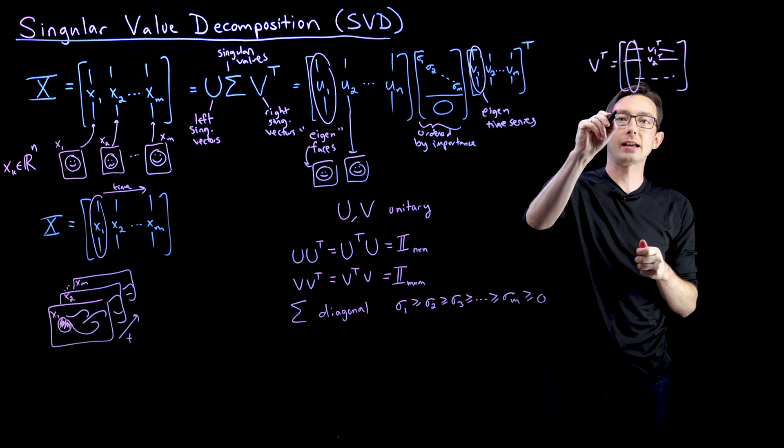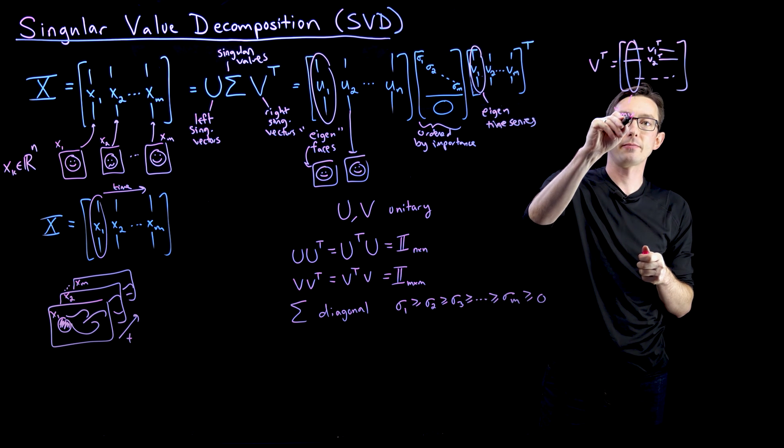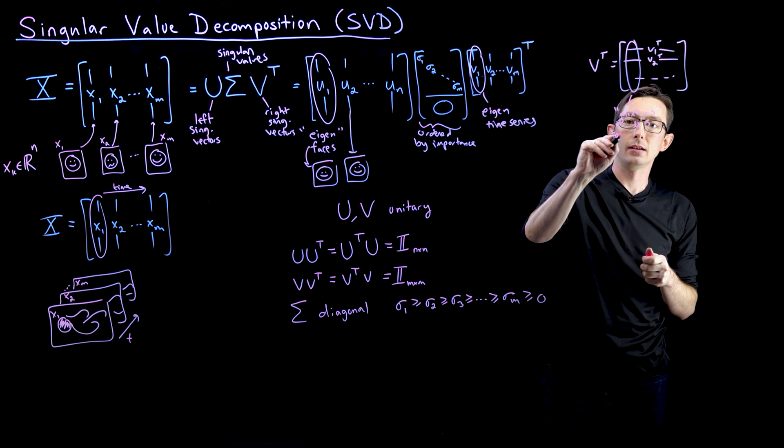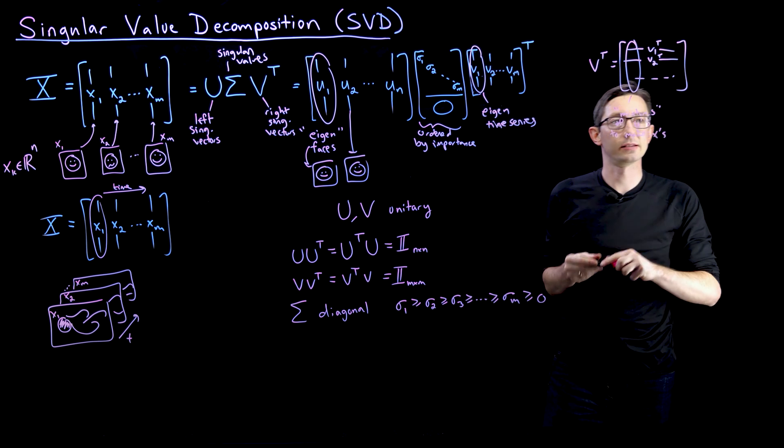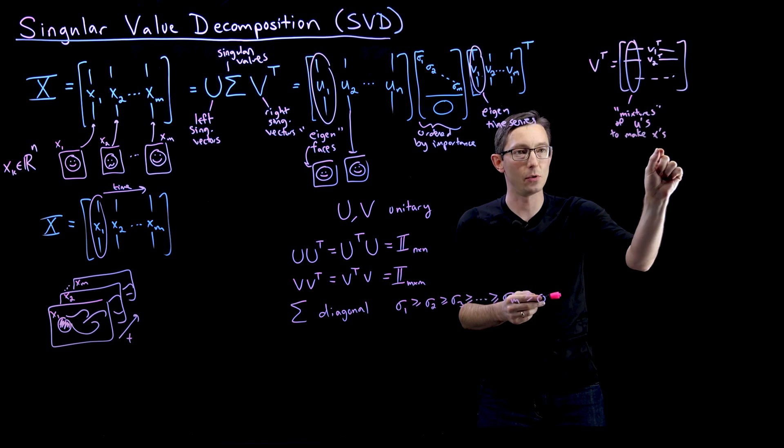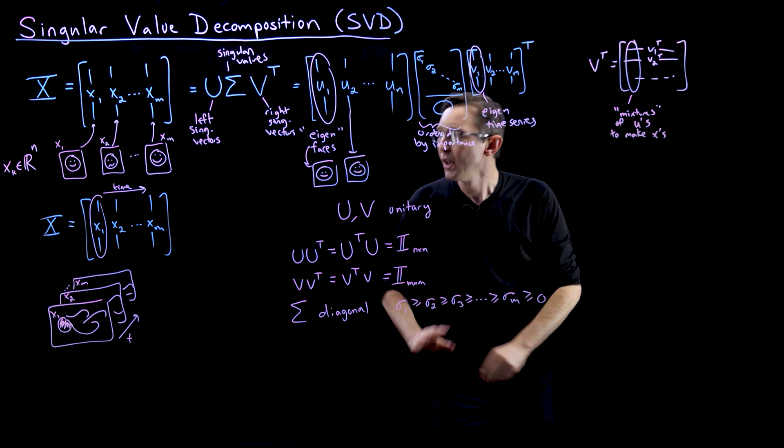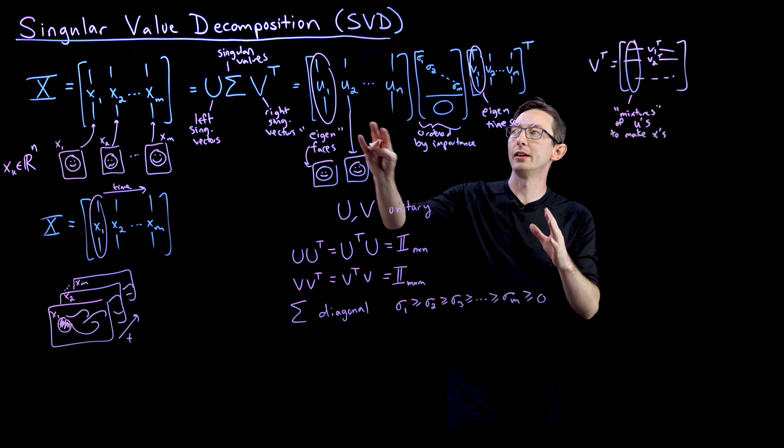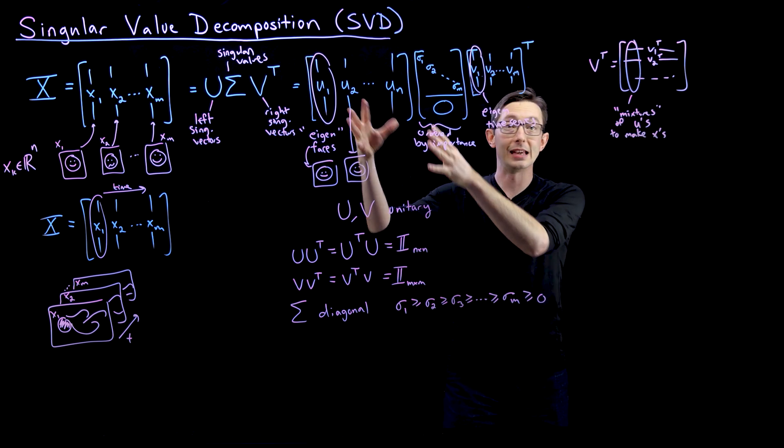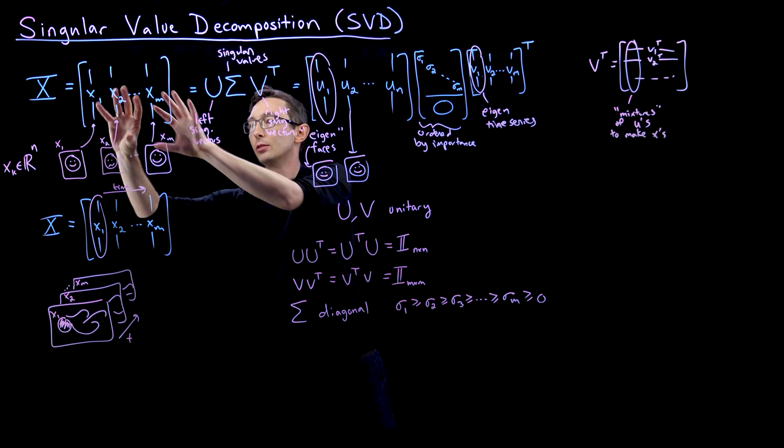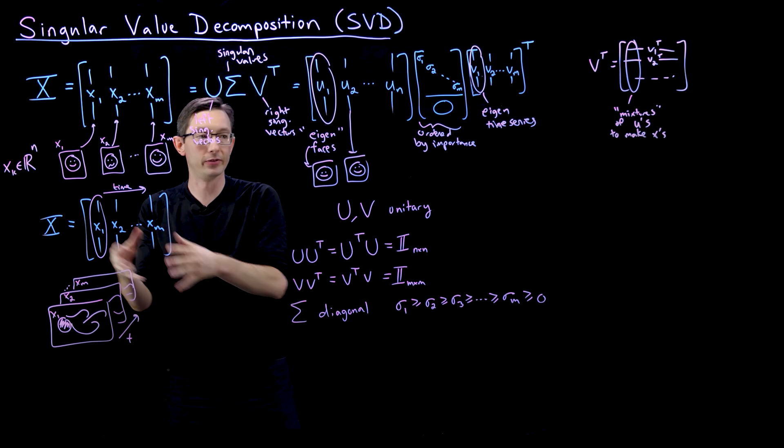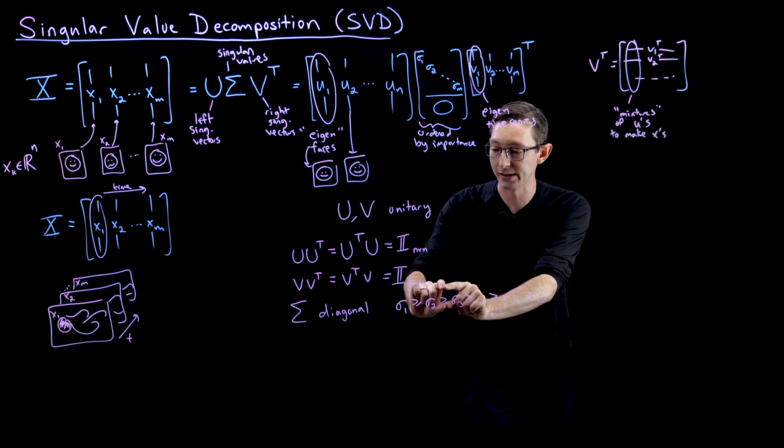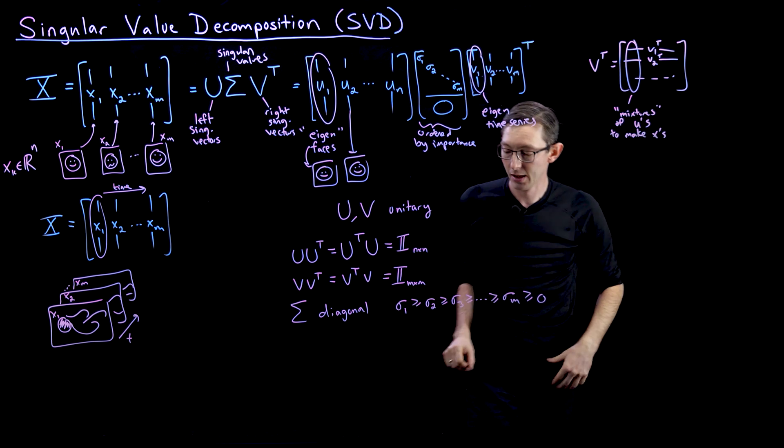So you can think of these as kind of mixtures of U's to make X's. So the first column makes X1, the second column makes X2, and so on and so forth. So very interpretable, very kind of easy to understand. The columns of U have the same size as a column of X. So if these are people, these are eigenpeople. If these are flow fields, these are eigen flow fields. And they're hierarchically organized and arranged based on these singular values, sigma.